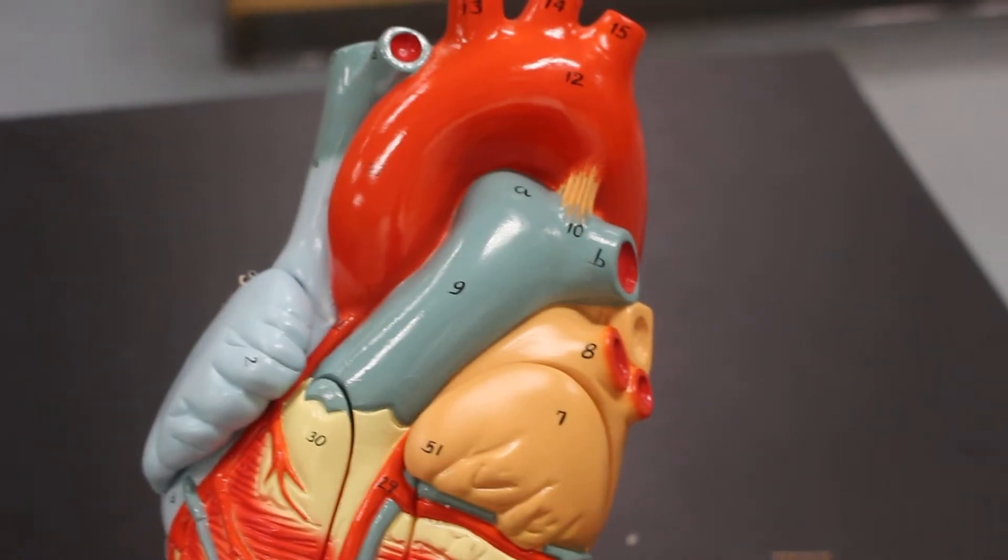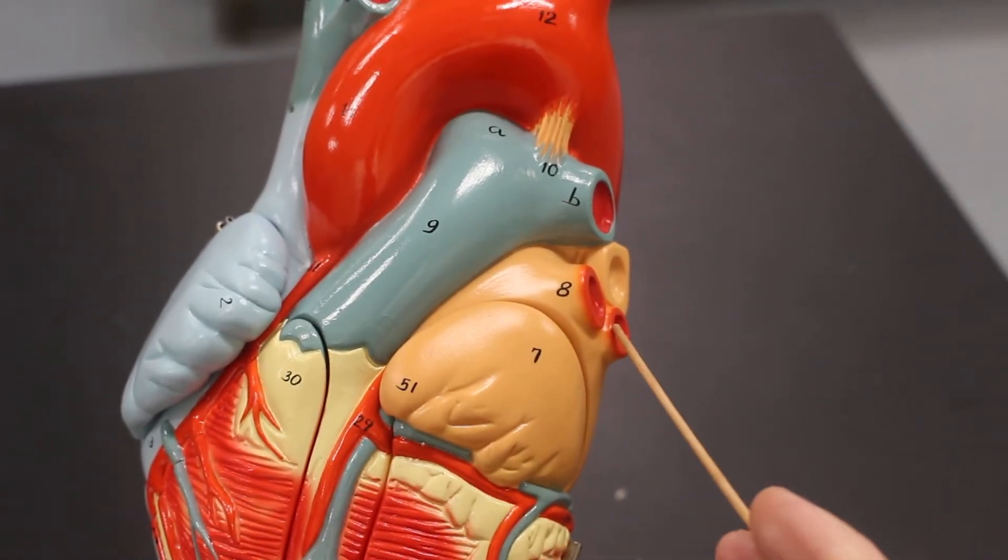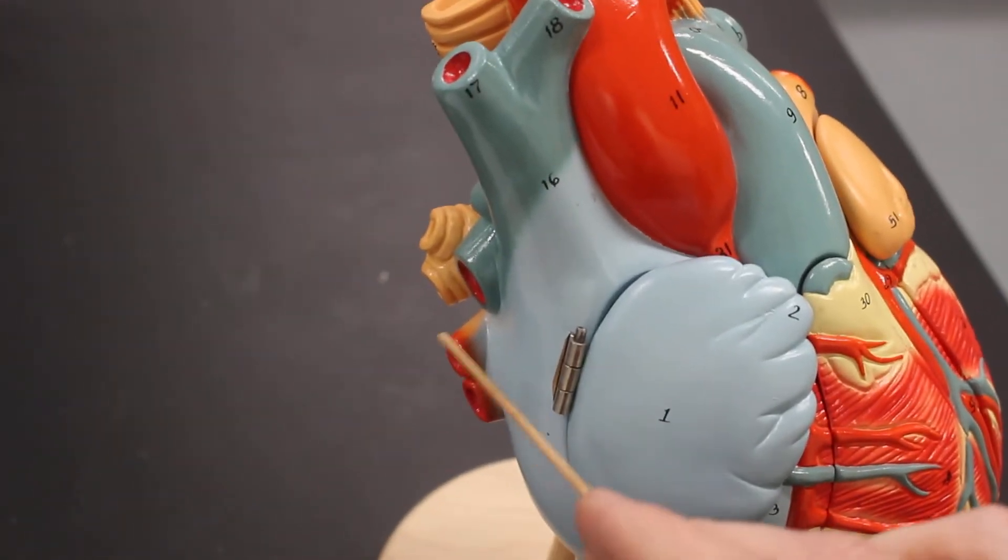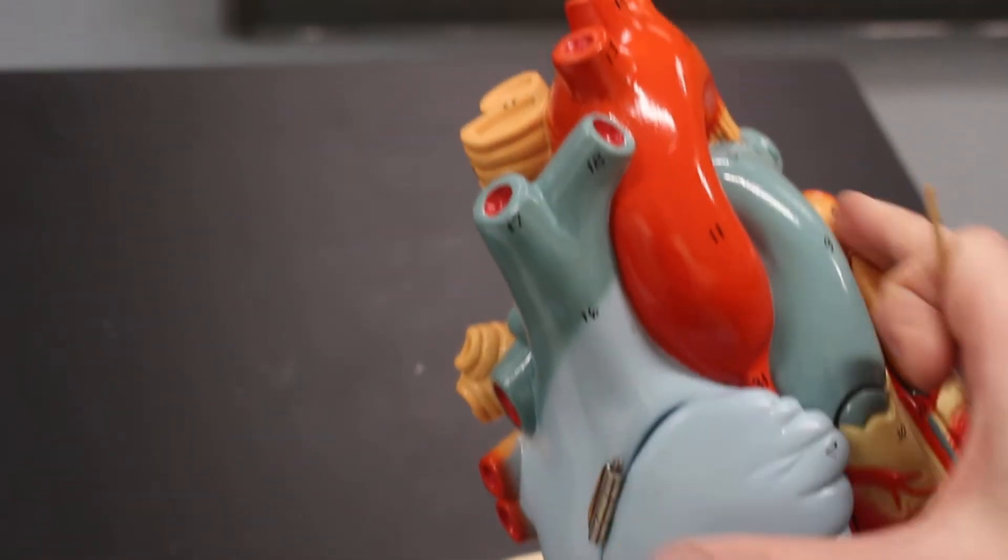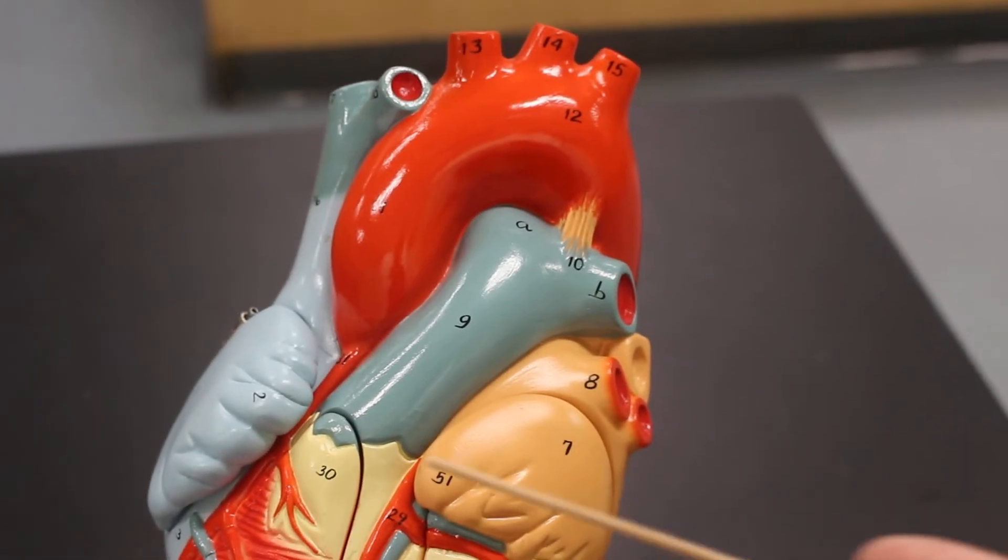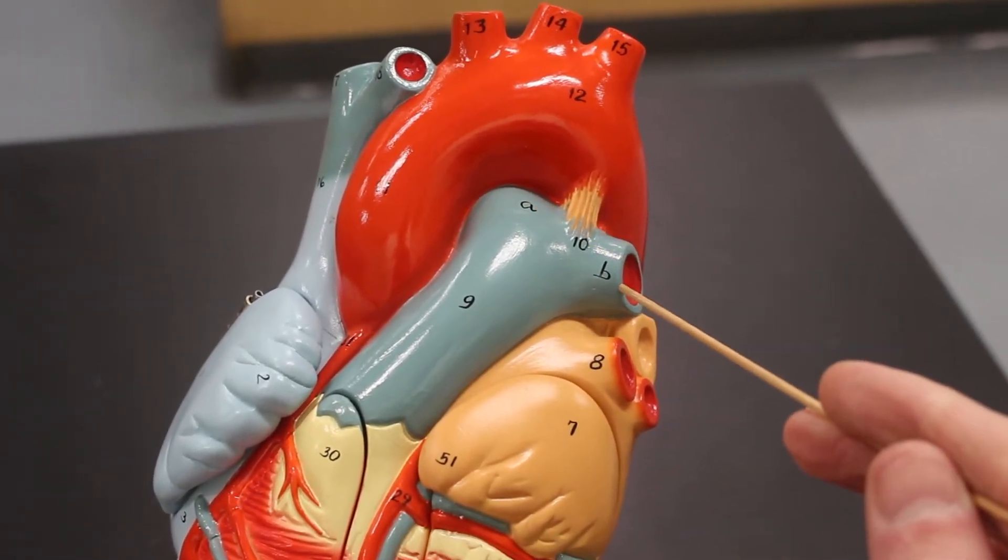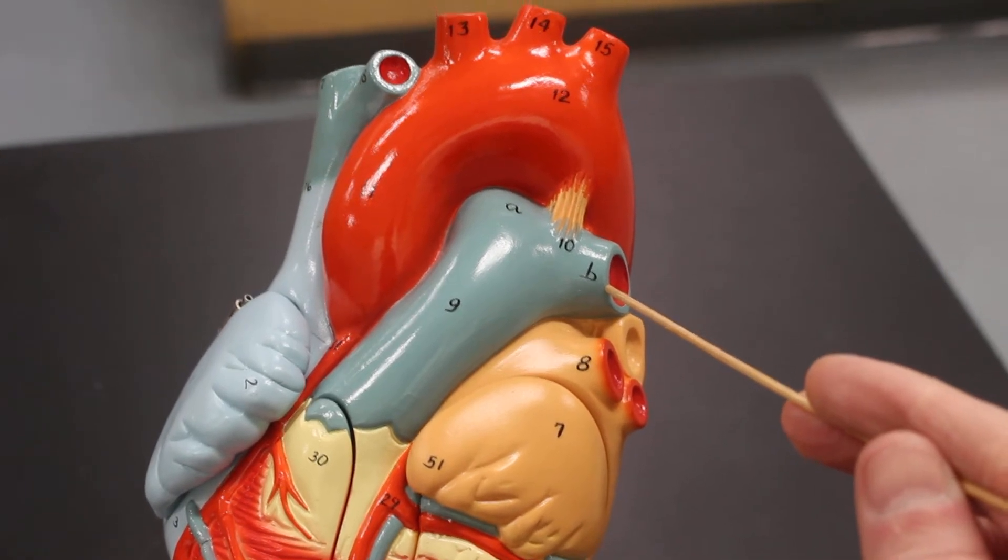Then we have these red pulmonary veins both over there and down here. In arteries we have the pulmonary trunk that splits into the right and left pulmonary arteries.